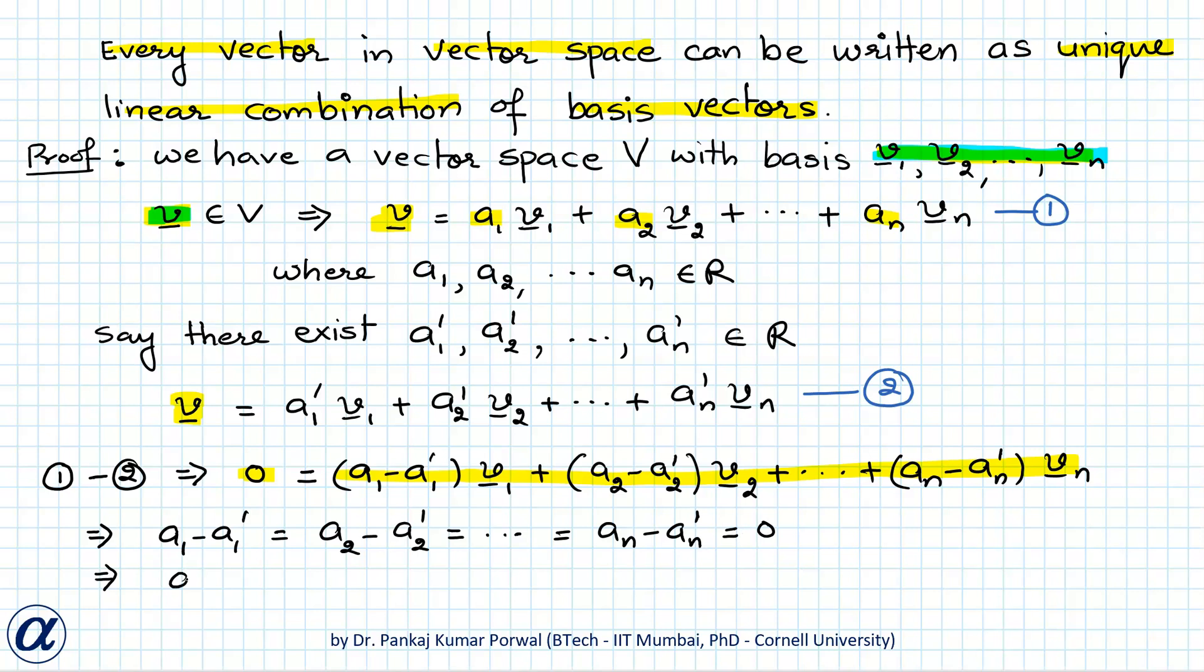So this implies A1 equals A1 dash, A2 equals A2 dash, dot dot dot, and An equals An dash. This shows that for both representations of the vector with respect to given basis we have same scalar coefficients. This proves that for a given vector there is only one unique linear combination with respect to a given basis, and these scalar coefficients are called coordinates of the vector v with respect to basis V1, V2, dot dot dot, Vn.